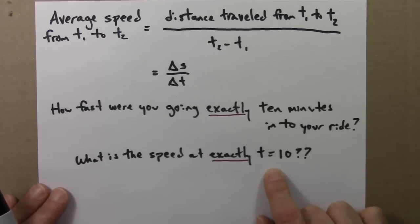So here's what we do. We take a time interval, maybe from t equals 10 to t equals 11, and then we calculate the average speed for that.